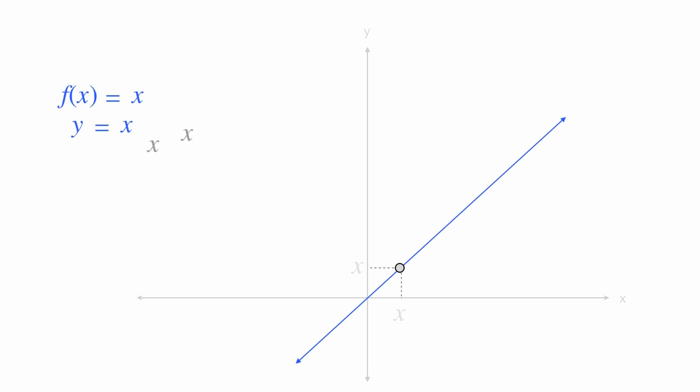Now if I pick another point that's h distance away, and I have x plus h, and I draw that line up, the associated y value is just x plus h.